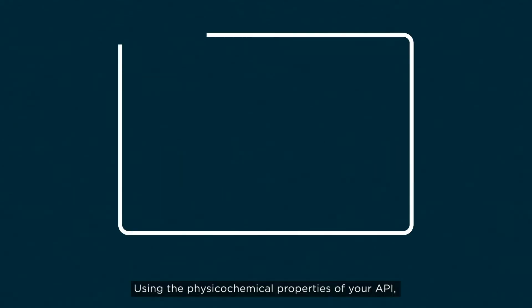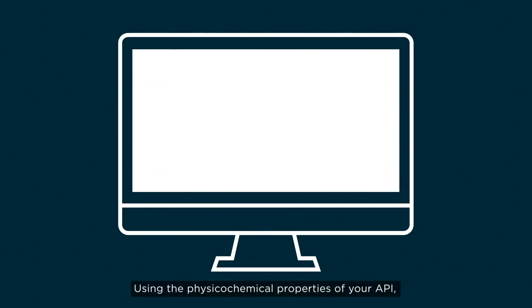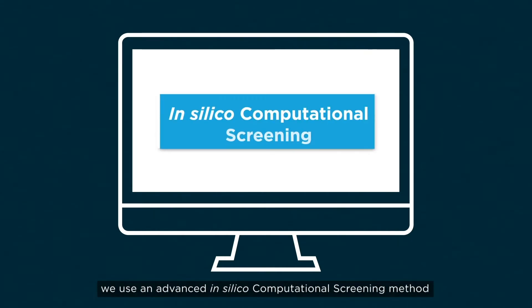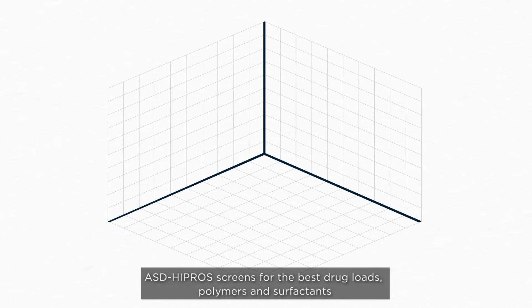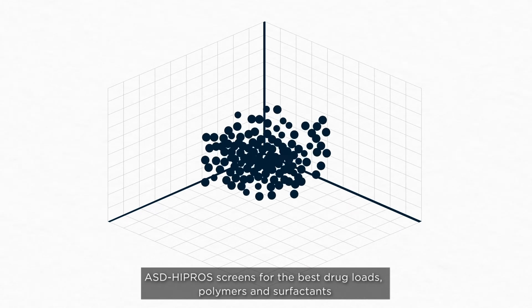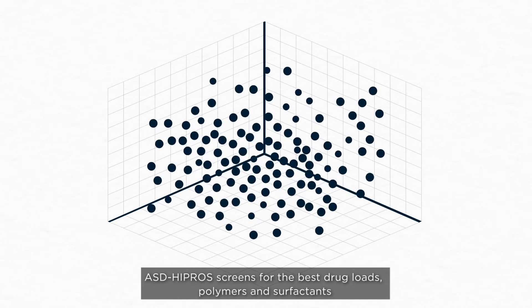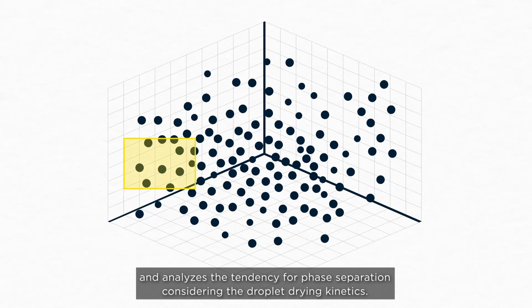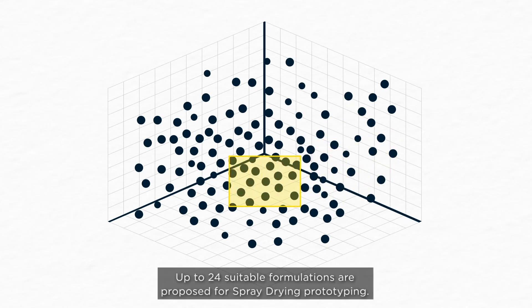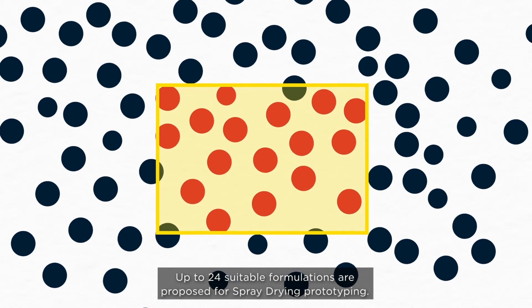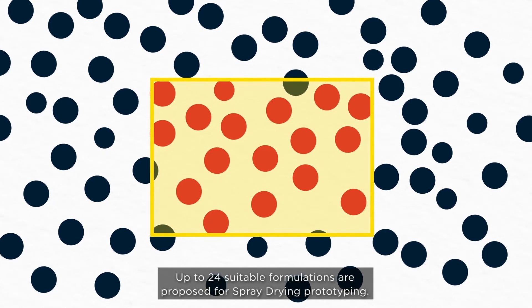Using the physicochemical properties of your API, we use an advanced in silico computational screening method to estimate adequacy of amorphous spray dry dispersions. ASD Hypros screens for the best drug loads, polymers and surfactants and analyzes the tendency for phase separation considering the droplet drying kinetics. Up to 24 suitable formulations are proposed for spray drying prototyping.